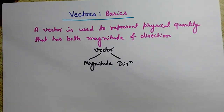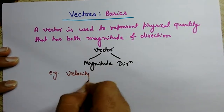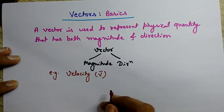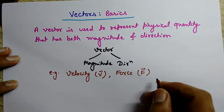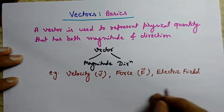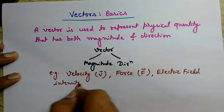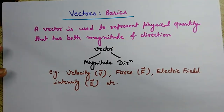So a few examples of vectors — physical quantities that are vectors are velocity, represented by the velocity vector; force, represented as F; electric field intensity, represented by E; and many others. As you can see, these vector quantities have an arrow to indicate that these physical quantities have direction associated with them along with the magnitude.